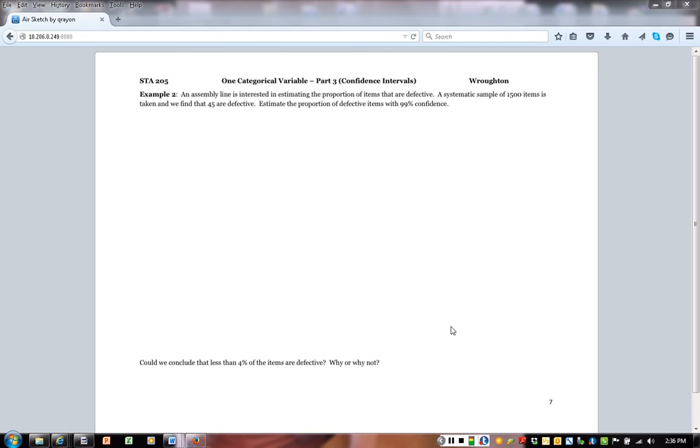So reading through example two, again some things to do is maybe highlight and figure out the important stuff here. We have an assembly line that is interested in estimating the proportion of items that are defective. We take a systematic sample of 1500 items and found that 45 of them were defective. We're going to estimate that with 99% confidence. So we sampled 1500 items, found 45 were defective. Our p-hat is going to be 45 out of 1500, which is 0.03. That might seem like a really small number, but we probably actually hope that the proportion of defective items is a pretty small number since we don't like to have defective items.